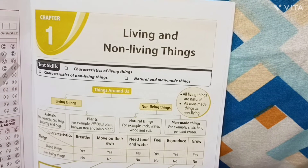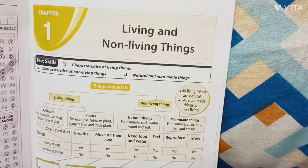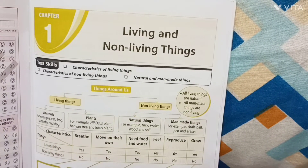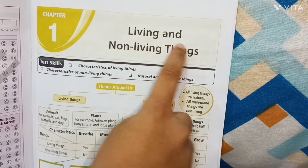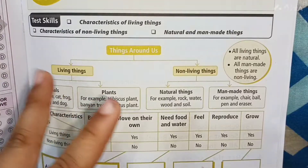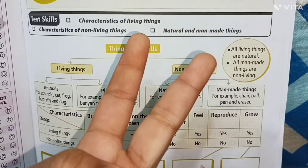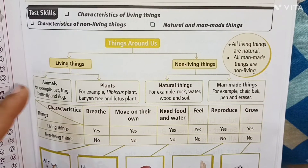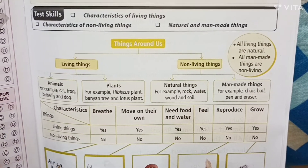Hello friends, welcome to Amman and Anand Riyanj. Today we are learning about living things and non-living things. We have two types of things: living things and non-living things.